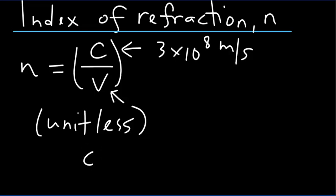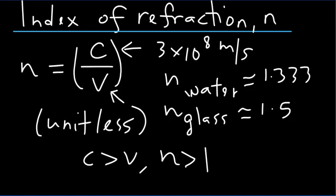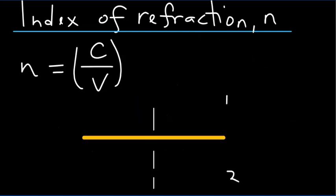Because the speed of light in vacuum is greater than the speed of light in any medium, the index of refraction for any medium is greater than 1. For example, the index of refraction for water is about 1.333, and for glass it is about 1.5. In this picture, medium 1 has index of refraction n1 and medium 2 has index of refraction n2.